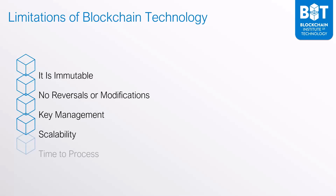One last disadvantage is time to process. While it is very fast to have a centralized database where you can just make a change and the changes are reflected instantly, when you're dealing with blockchain you have multiple copies of the blockchain and you need to wait until you actually achieve consensus across all the nodes that have a copy of that blockchain. As a result, the time to process can be far slower than a centralized database solution.